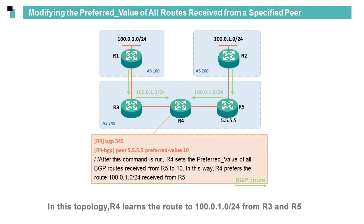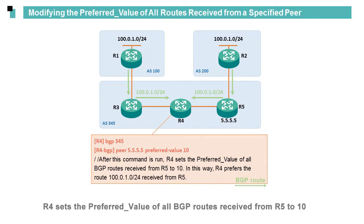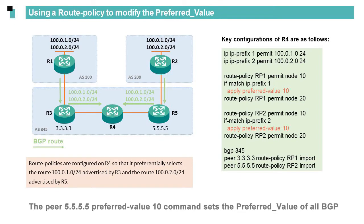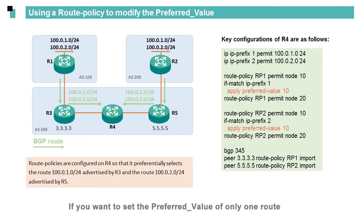In this topology, R4 learns the route to 100.0.1.0/24 from R3 and R5. After the 'peer 5.5.5.5 preferred-value 10' command is run on R4, R4 sets the preferred value of all BGP routes received from R5 to 10. In this way, R4 prefers the route 100.0.1.0/24 received from R5 according to the first route selection rule. If you want to set the preferred value of only one route, configure a route policy.